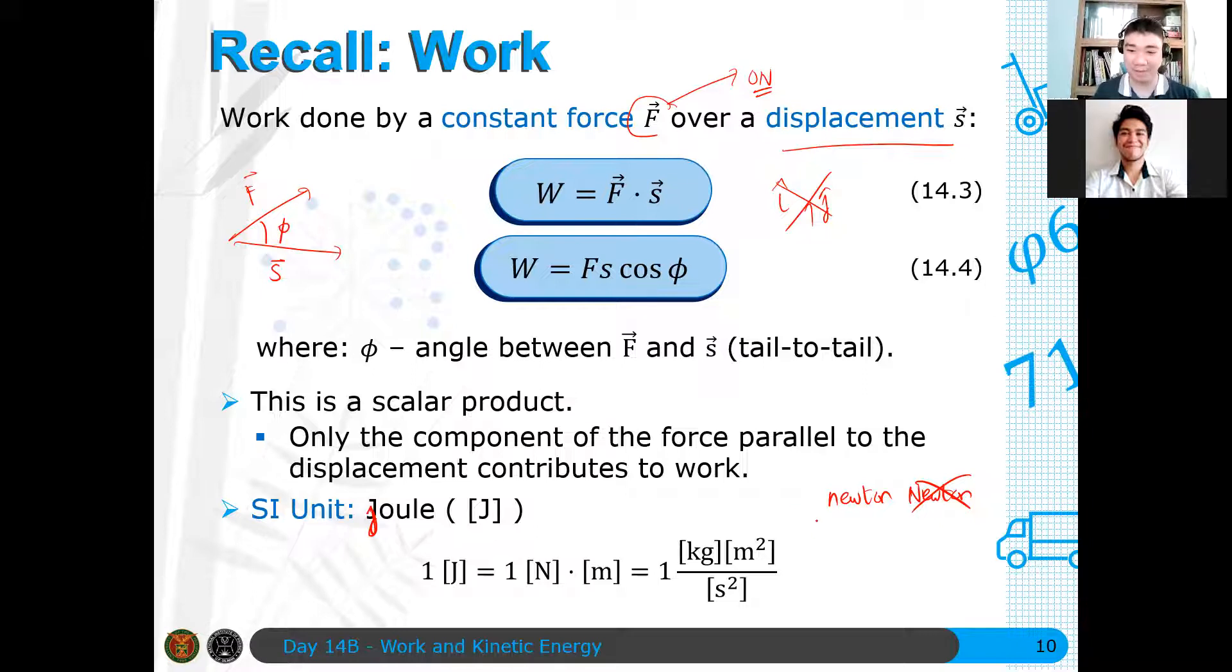And one joule is one newton meter or one kilogram meter squared per second squared. So this is one kilogram mass, length squared over time squared. That's the units in the usual mass length time scale. So okay? Any questions? This is just a review. Any questions?